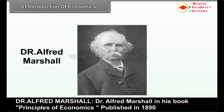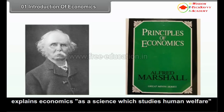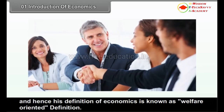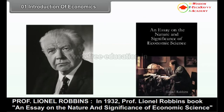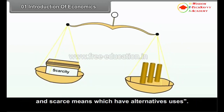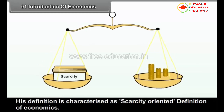Dr. Alfred Marshall, in his book Principles of Economics published in 1890, explains economics as a science which studies human welfare. His definition of economics is known as a welfare-oriented definition. Professor Lionel Robbins, in 1932, in his book An Essay on the Nature and Significance of Economic Science, explained: Economics is a science which studies human behavior as a relationship between ends and scarce means which have alternative uses. This is the modern definition of economics, characterized as a scarcity-oriented definition.